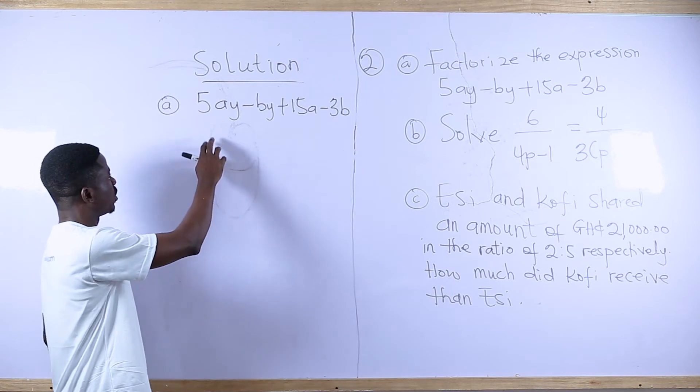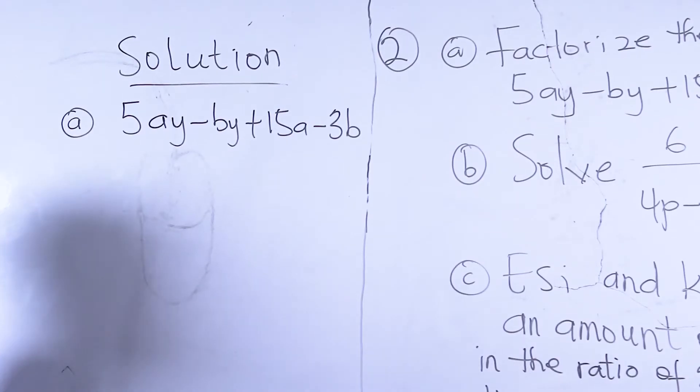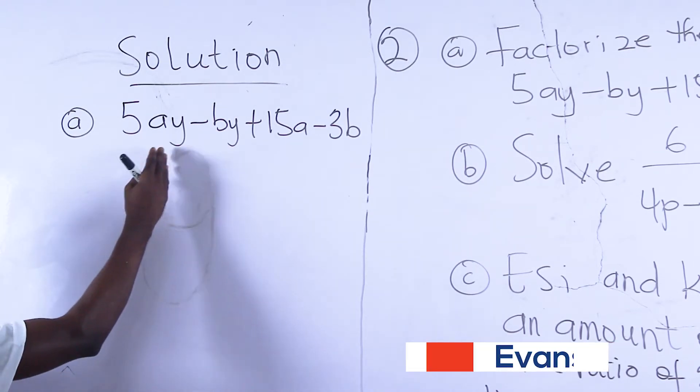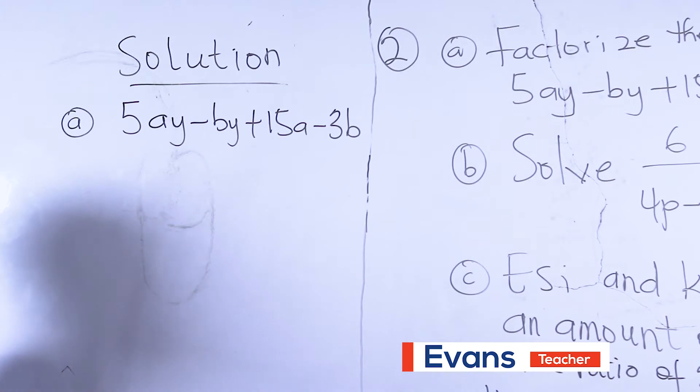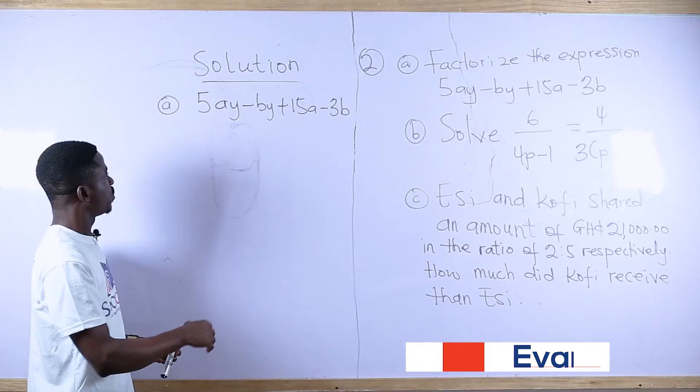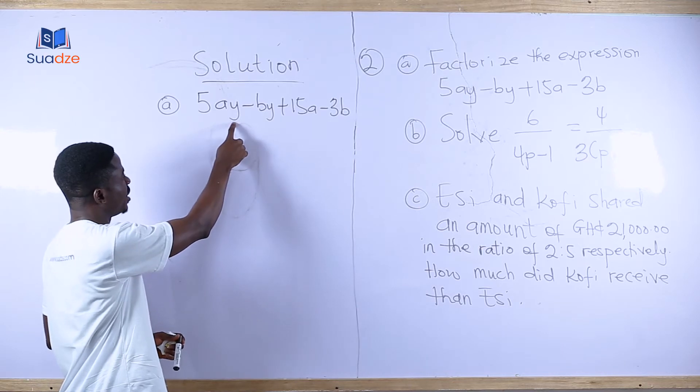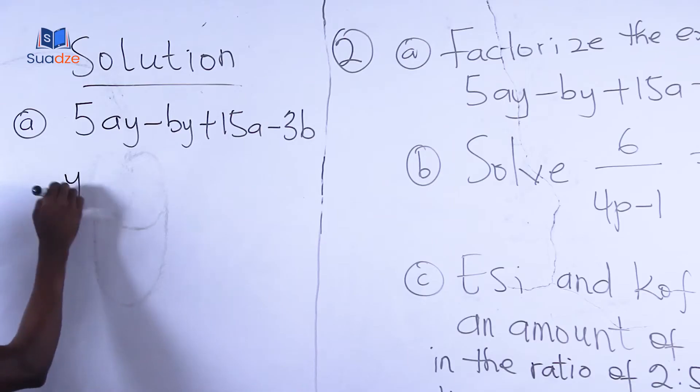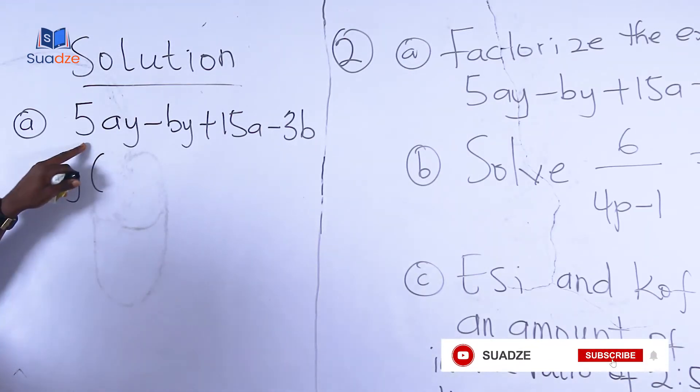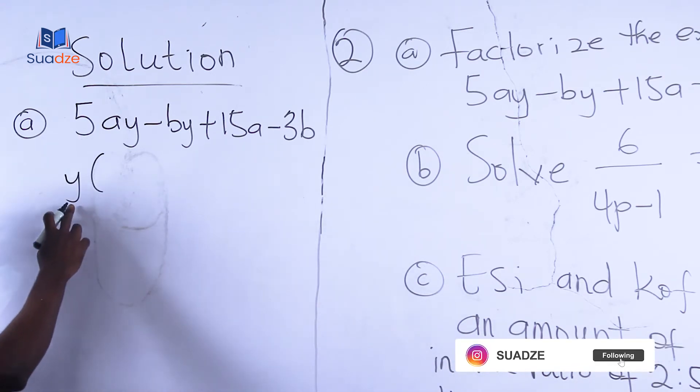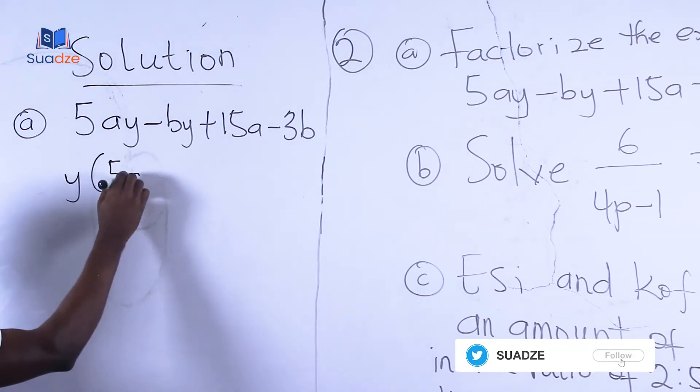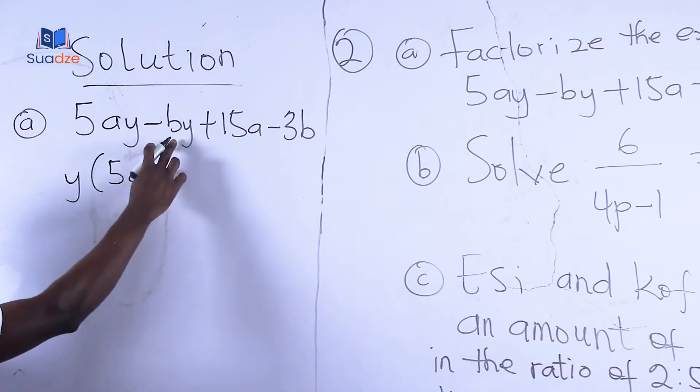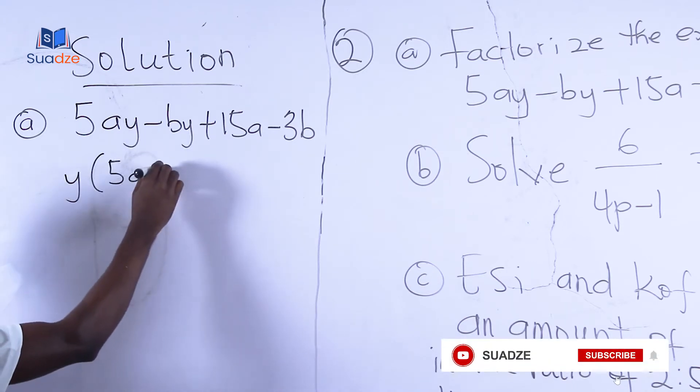The first expression is 5ay and the second expression is by. So we look at these two expressions, which variables are common among them. Realize that there's y here and y here. So we factorize the y out and then we bring our brackets. In the first expression, we have 5ay. After we brought the y out, we'll be left with 5a. The second expression, we brought y out, so we'll be left with b.